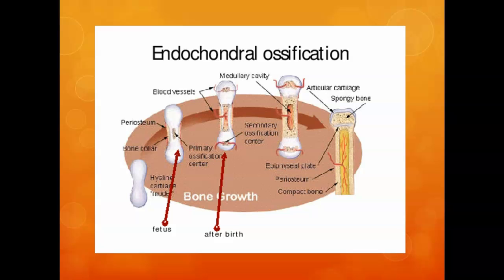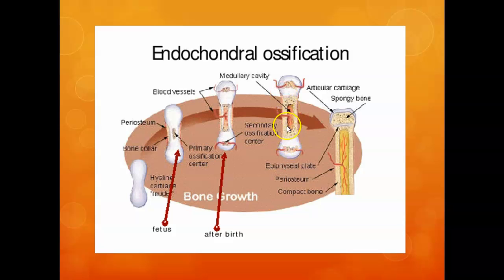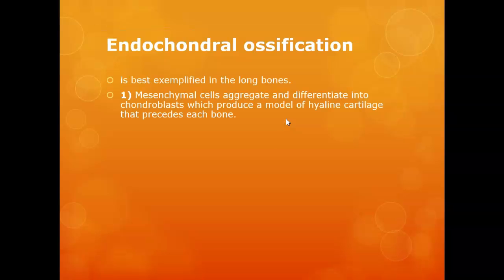The bone gets remodeled and the cartilage changes. The reason you have hyaline cartilage at the ends of your bones is because that's what your skeleton began as early on. The primary ossification center starts in the shaft; the secondary goes into the ends. These ends mature at different times.